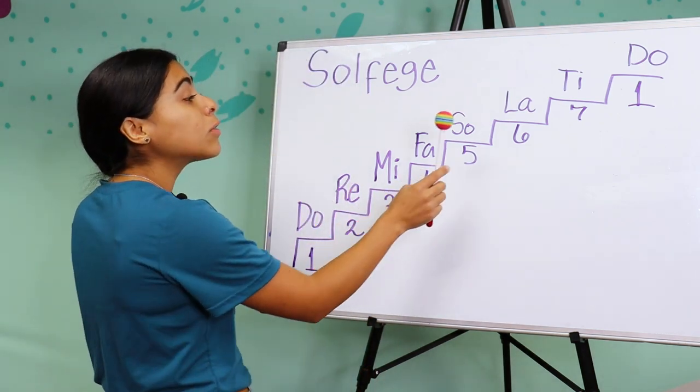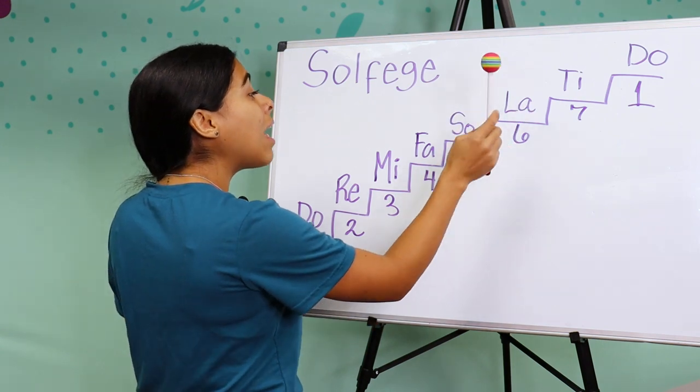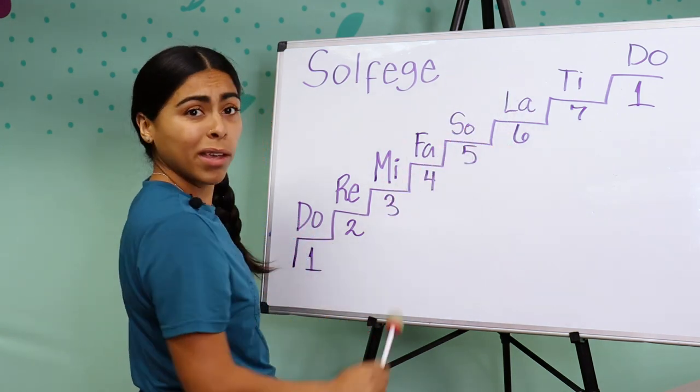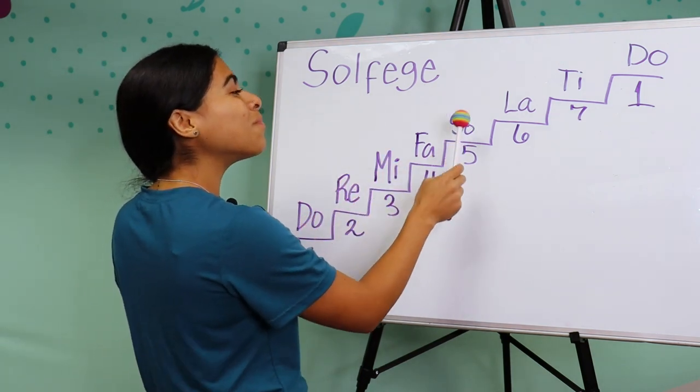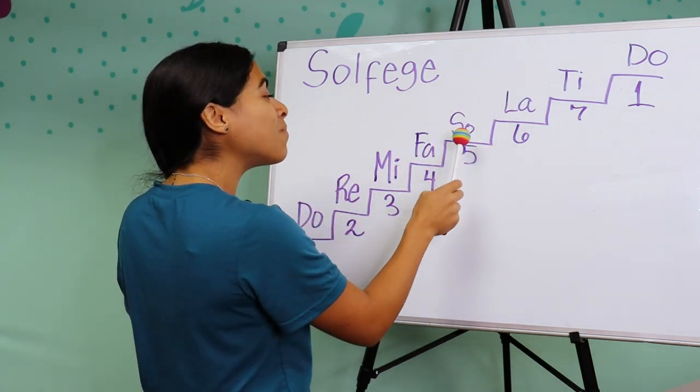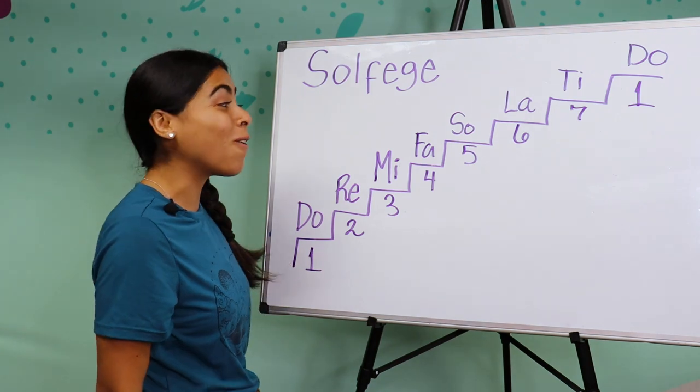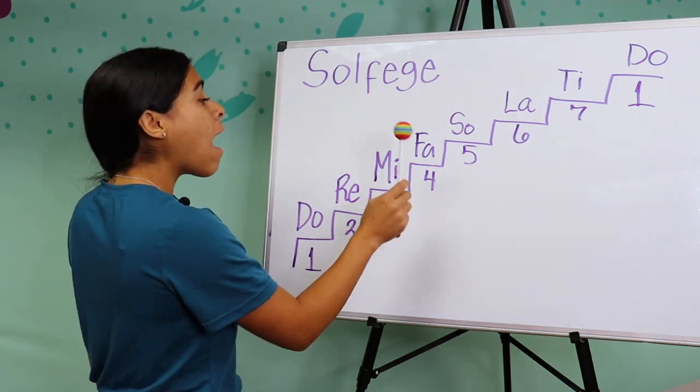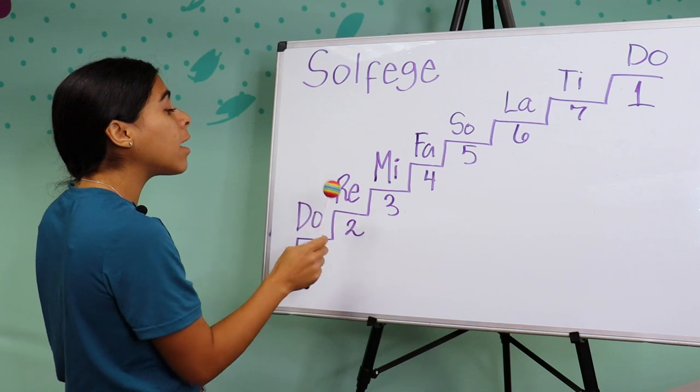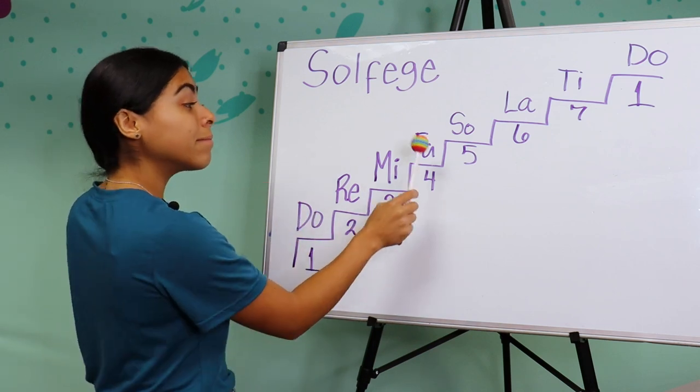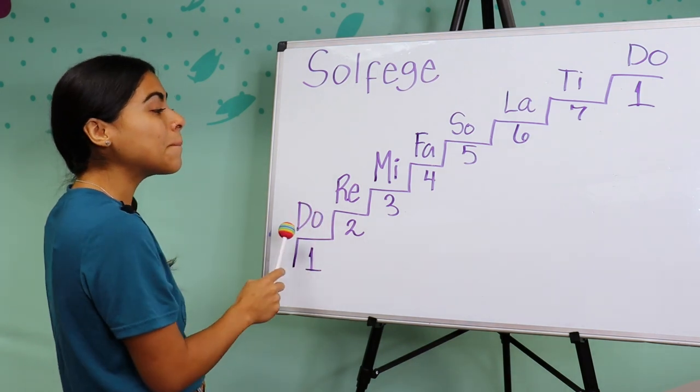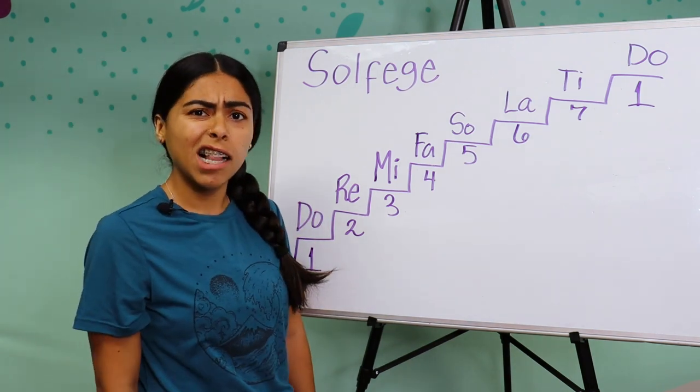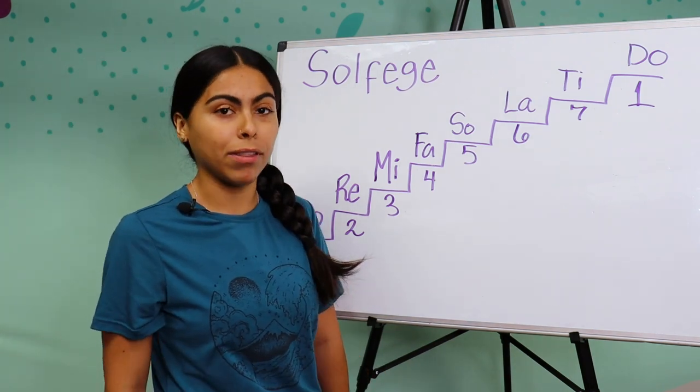Starting with the Do. Do, Do, Sol, Sol, La, La, Sol. Can you do that? Yes? Beautiful. Next part: Fa, Fa, Mi, Mi, Re, Re, Do. Very nice. Let's do the whole thing. I think you have the hang of it.